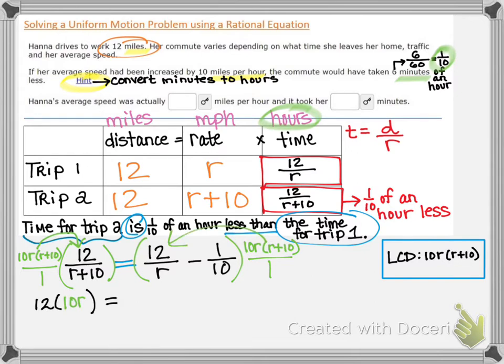Then we have our equal sign. Now on the right side, when we distribute the LCD, the first time we distribute the factor R will divide out. So we'll be left with 12 times 10 times the binomial R plus 10 minus, now let's distribute one more time. So now when we distribute the factor of 10 is the common factor. So the factor of 10 will divide out. So we will have minus 1 times R times R plus 10.